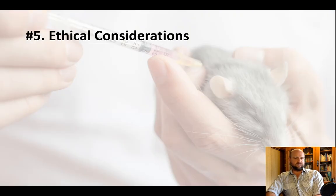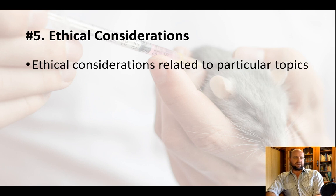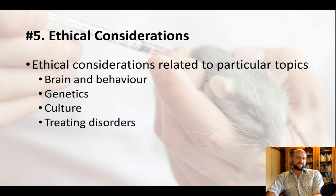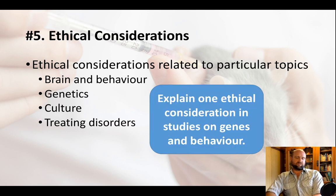The hardest type of question to answer is the fifth: ethical considerations. You have to explain what the considerations are related to particular topics like studying the brain and behavior, genetics, or culture. Higher-level students will have to understand ethical considerations related to animal research. Treating disorders is another example that could appear in Paper 2. A short answer question in Paper 1 might be: explain one ethical consideration in studies on genes and behavior.